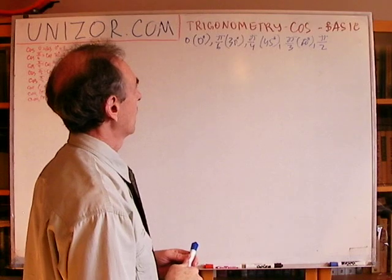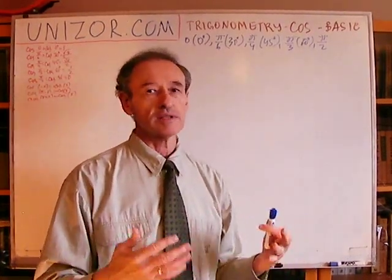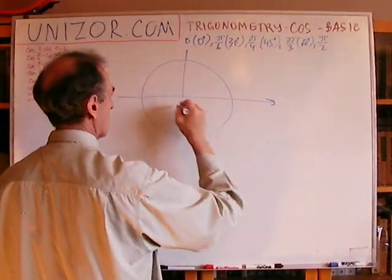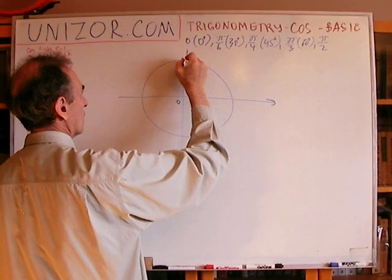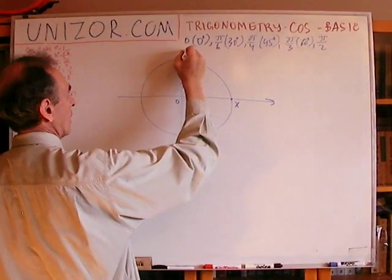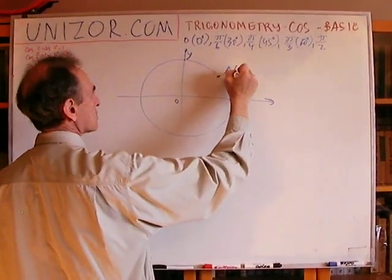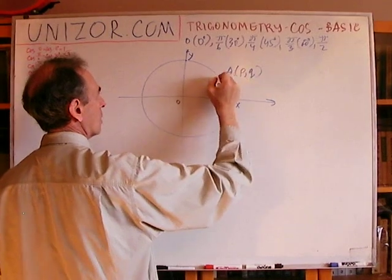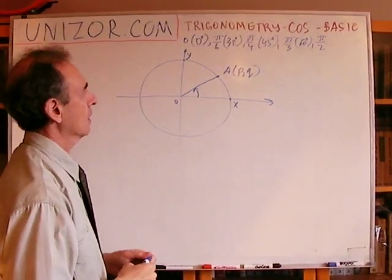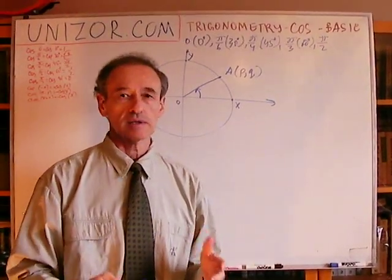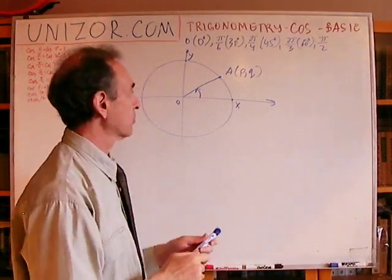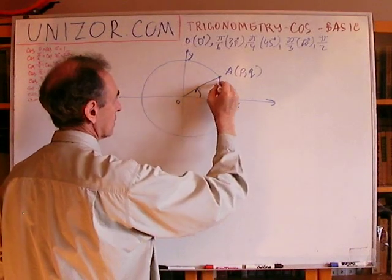So, for any of these angles, we will calculate the value of cosine. Let's go back to the basics. This is our unit circle. These are crossing with axis, and this is our point A with coordinates PQ, and this is an angle which we are talking about. It's really following exactly the same pattern as the previous lecture for sine, except instead of coordinate, I have to consider abscissa.